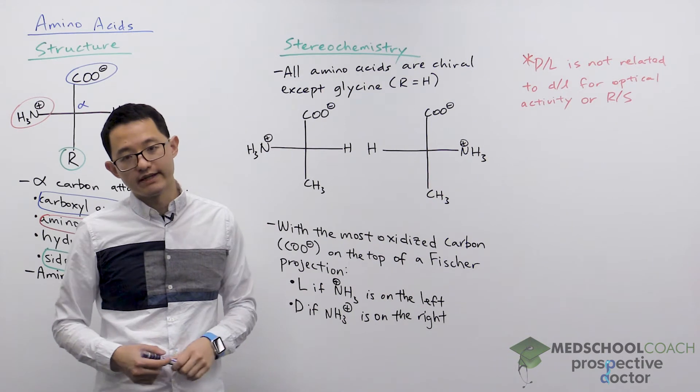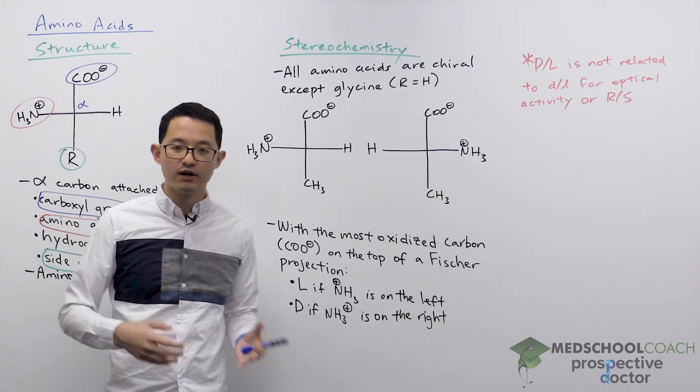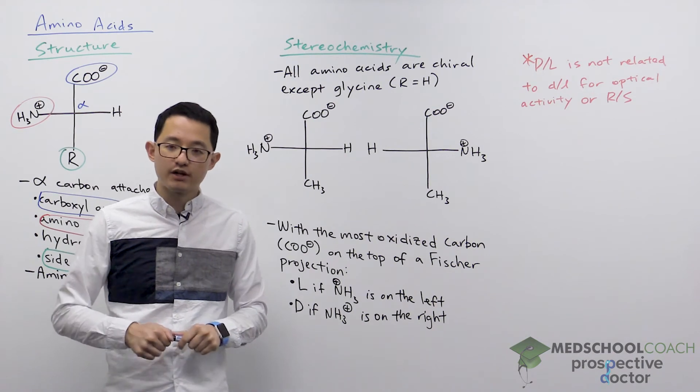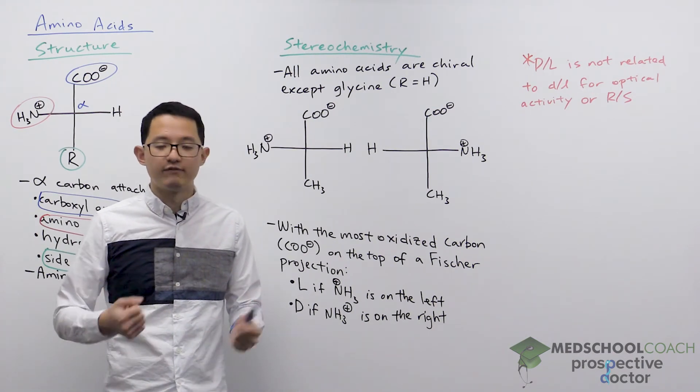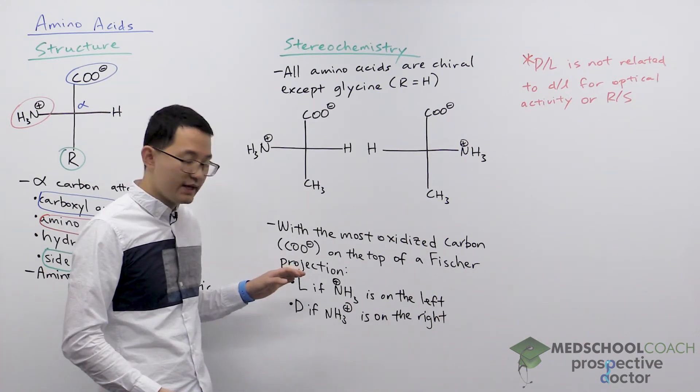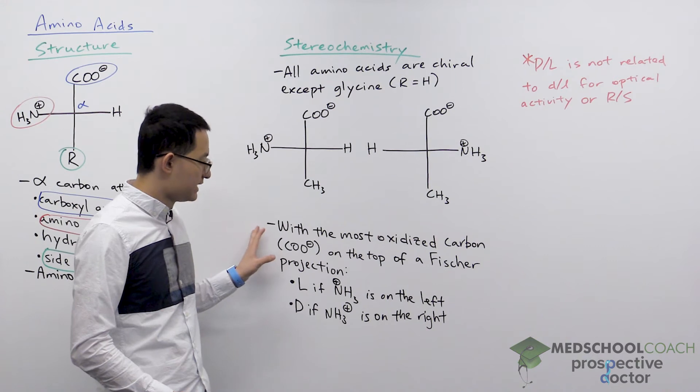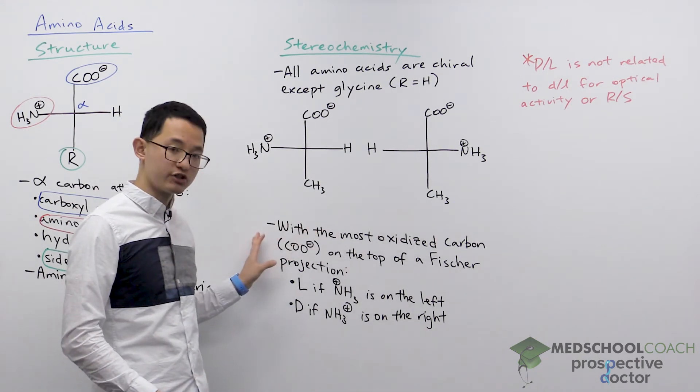Now before when we looked at enantiomers we would assign them absolute configurations of R or S. When we're dealing with carbohydrates and amino acids we tend to use a different configuration instead. We use D and L. And the way we assign this is by looking at your amino acids in the Fischer projection.